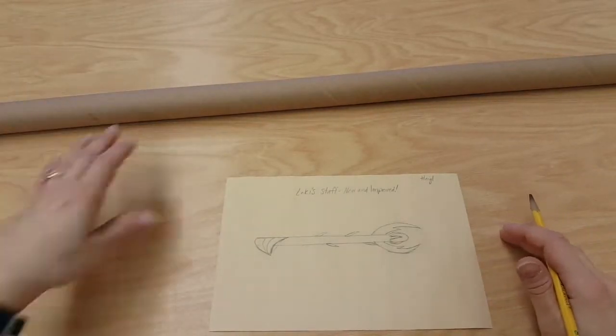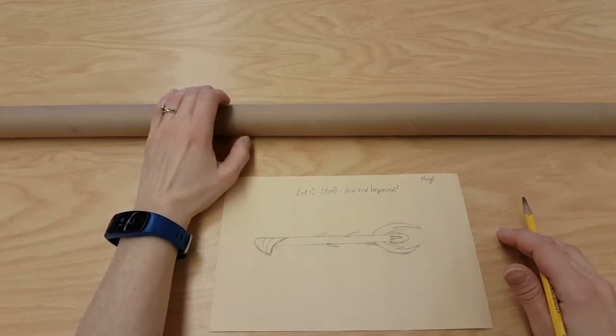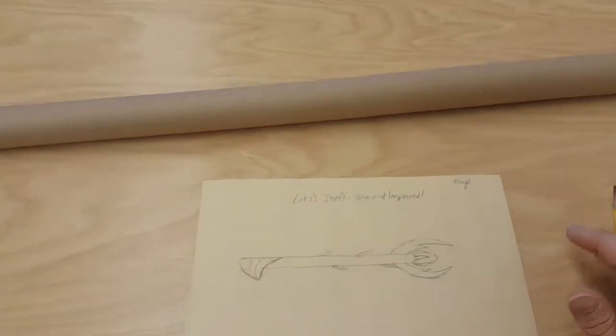It's how he controls people's minds, and we're going to have these very long tubes that formerly held light bulbs. We're using those for our staff. They're about four feet long.